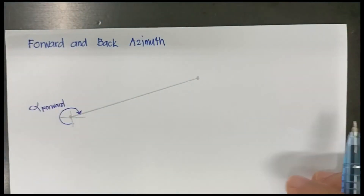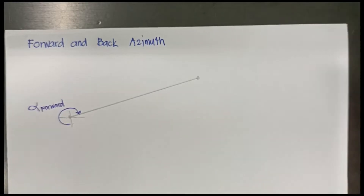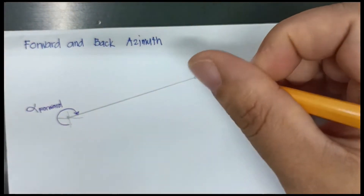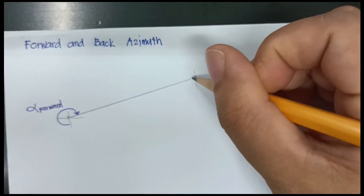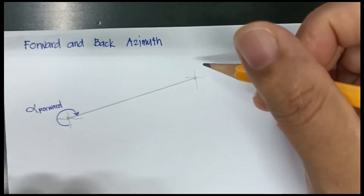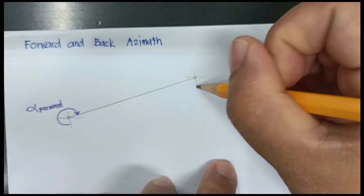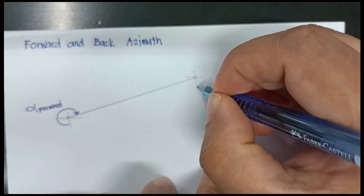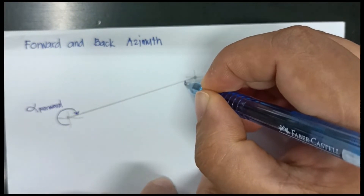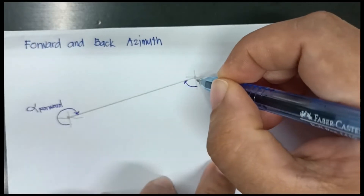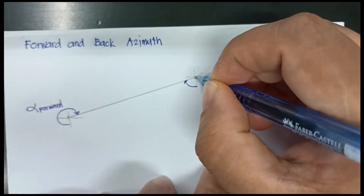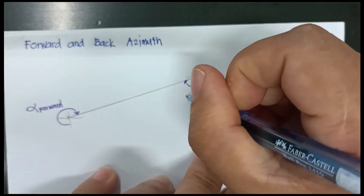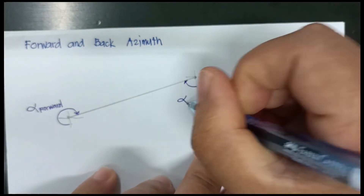Now, drawing a north-south-east-west line at the terminal point: the azimuth here is measured from the south branch to the line. Since this is the terminal point, this is called the back azimuth.